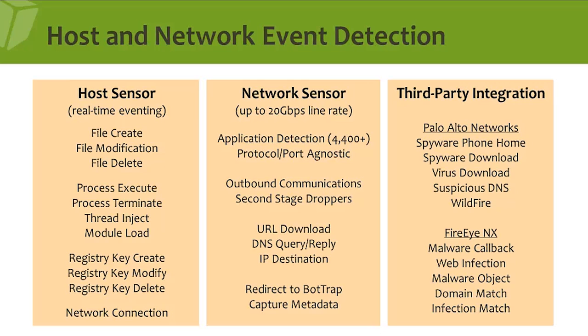We can look for URL downloads via FTP, HTTP, and HTTPS, look at DNS queries, and look at destination IP addresses. We can redirect to a bot trap — a honey client — and capture metadata. For third-party integration, we bring in Palo Alto threat prevention module and Wildfire: spyware phone home, spyware download, virus, DNS, and Wildfire alerts, as well as the FireEye NX platform alerts for malware callbacks, web infections, domain matches, and infection matches, bringing in the malware object from sandbox detonation directly into the Hawkeye platform.